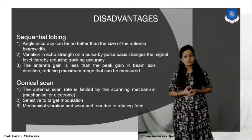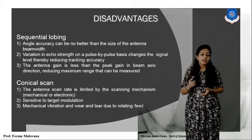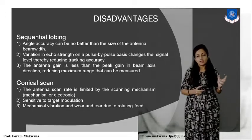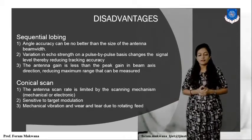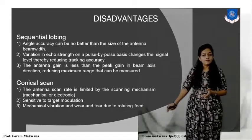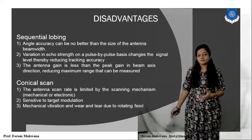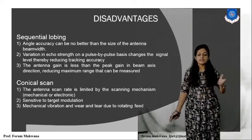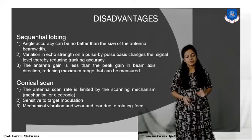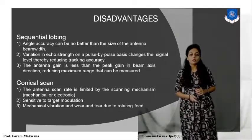The disadvantage of the conical scan is that the antenna scanning rate is limited by mechanical constraints, so it may cause a mechanical error. Second, it is sensitive to target modulation. And third, if there is mechanical vibration due to the magnetic field, it may cause error in the azimuth and the elevation angle rotation of the antenna. These are the disadvantages of sequential rotation and conical scan.